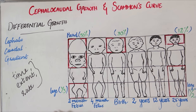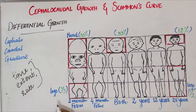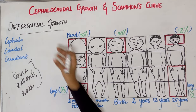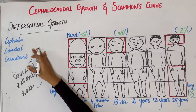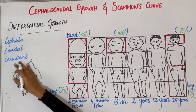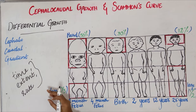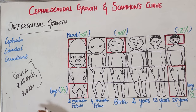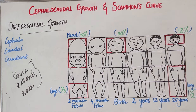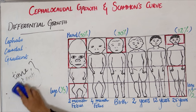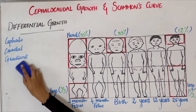First, coming to cephalocaudal growth: the word 'cephalo' relates to the head, and 'caudal' means the trunk portion. 'Gradient' means showing the change occurring from one point to another. So in the cephalocaudal gradient, we'll be seeing how there is a change in proportion of growth from the head to the toe region. There is an increased axis of growth from head to toe, and this is called the cephalocaudal gradient of growth.